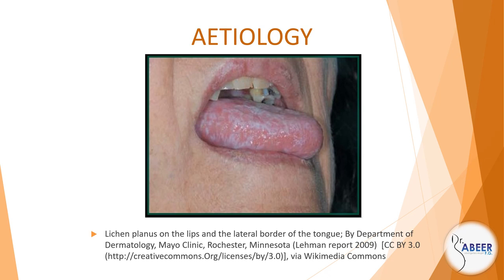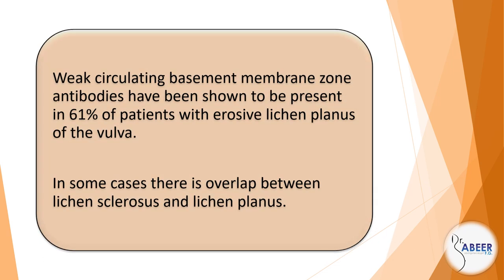More rarely, it affects the lacrimal duct, esophagus, and external auditory meatus. It is an inflammatory condition of unknown pathogenesis, but is probably an immunological response by T-cells activated by, as yet unidentified, antigens. Weak circulating basement membrane zone antibodies have been shown to be present in 61% of patients with erosive lichen planus of the vulva. In some cases, there is overlap between lichen sclerosis and lichen planus.